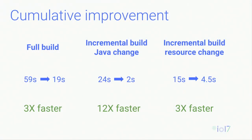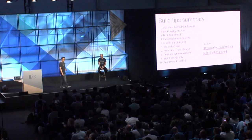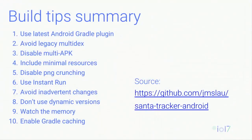Here are the cumulative improvements after applying all these tips: the full build is now three times faster, the incremental Java build is 12 times faster, and the resource change is also three times faster. I have also created a GitHub repo if you want to reproduce some of these results and experiment with the tips yourselves. Thank you.